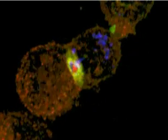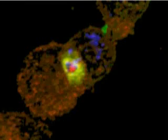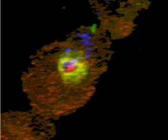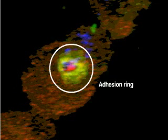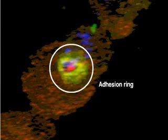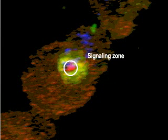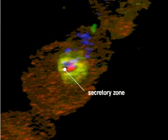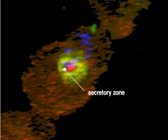If we look closely at the synapse, we can see its structure. The outer ring contains the adhesion molecule, and the inner ring is divided into two parts: one containing the signaling molecules, and the other, dark in this image, is the secretory zone.